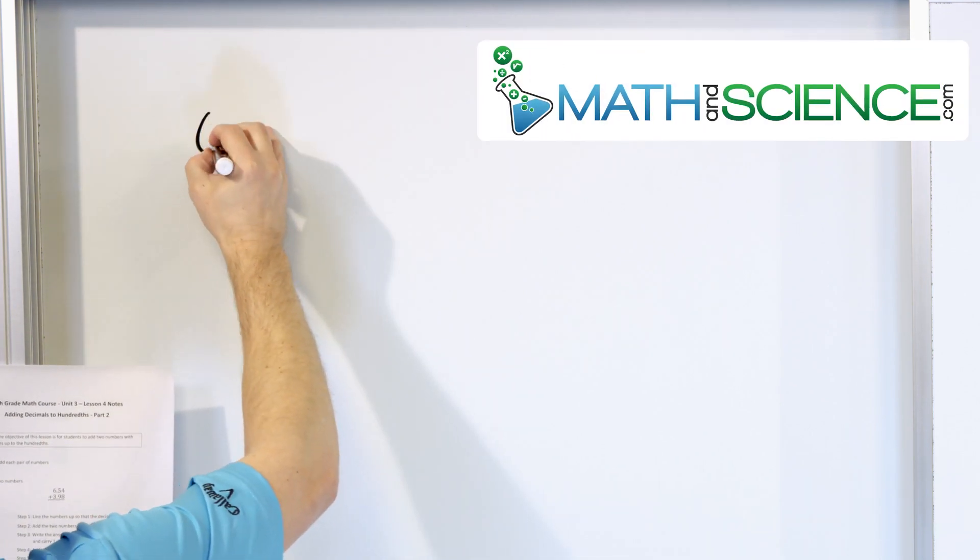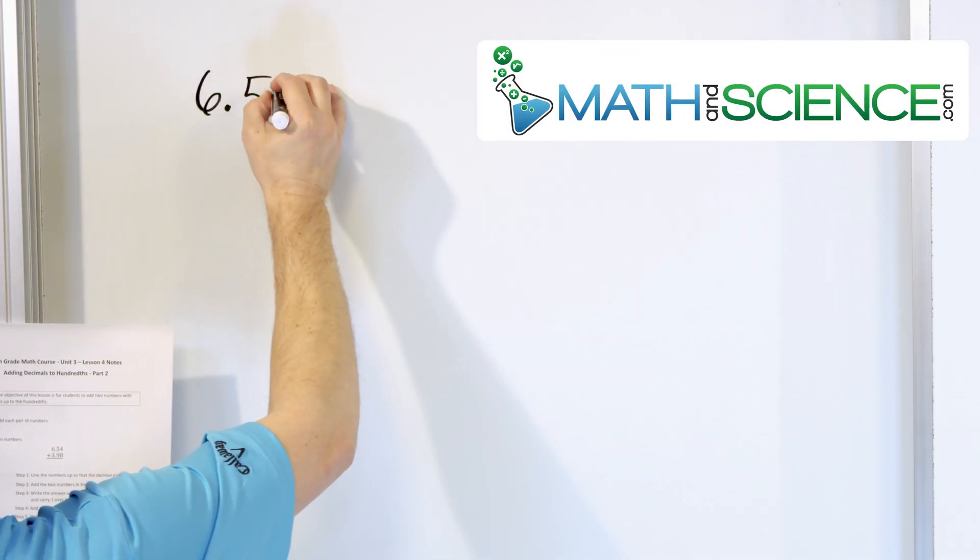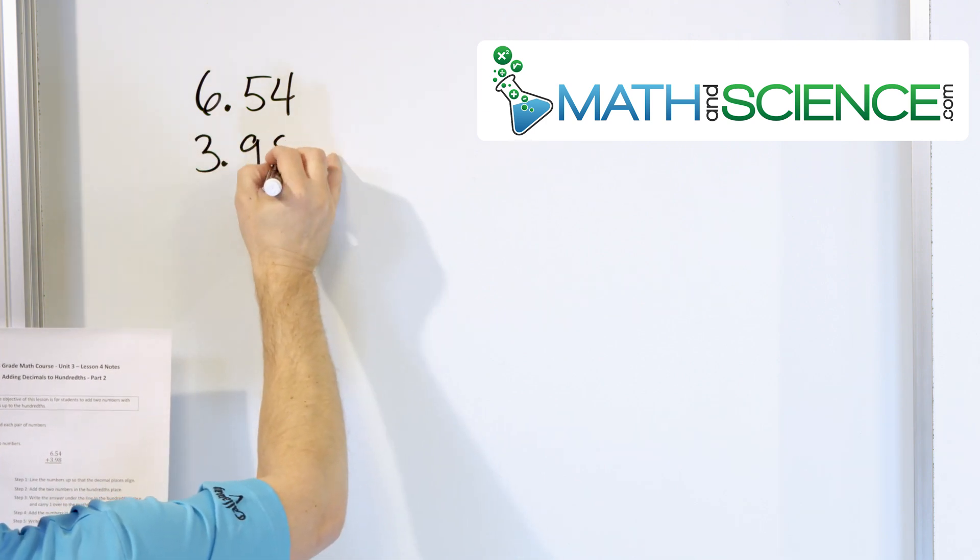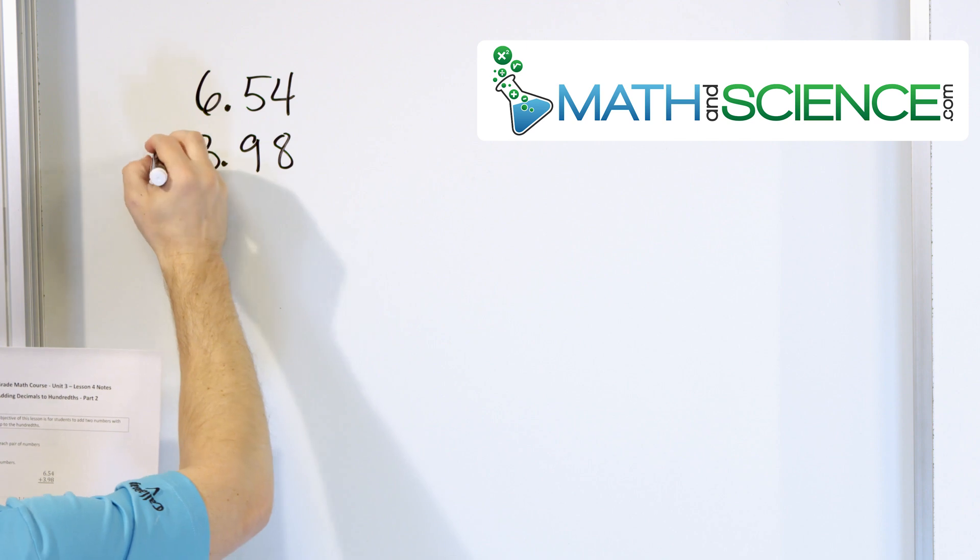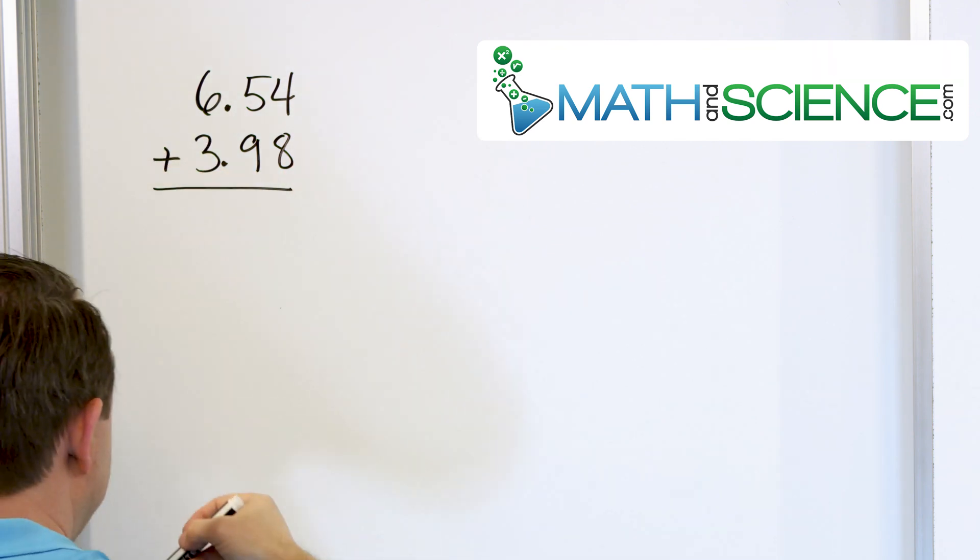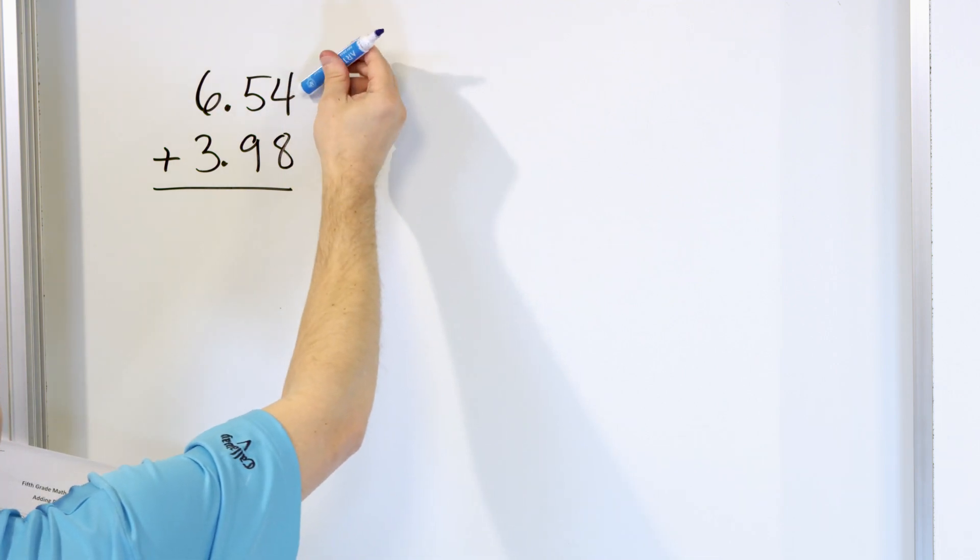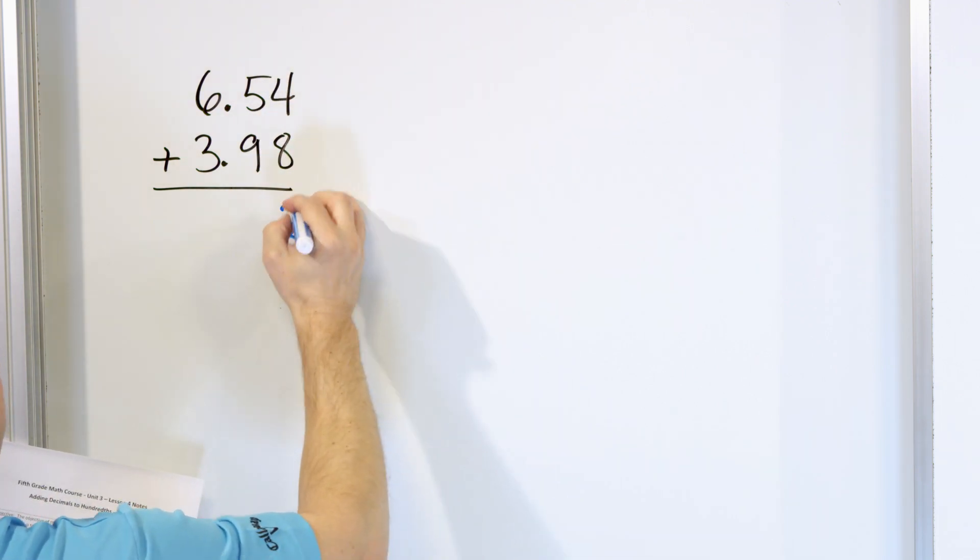The first problem is, let's say we have 6.54, and we want to add this to 3.98. So we have the decimal points lined up, and we add beginning in the right column. So what do we have? 8, 9, 10, 11, 12. 12 means we put a 2, carry a 1.